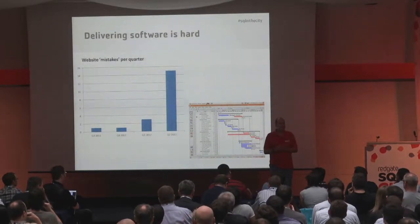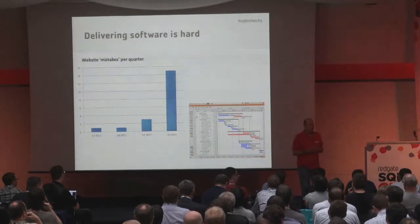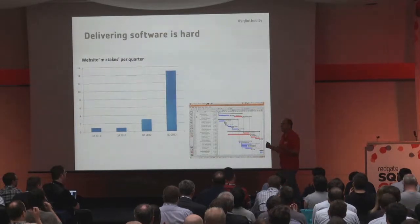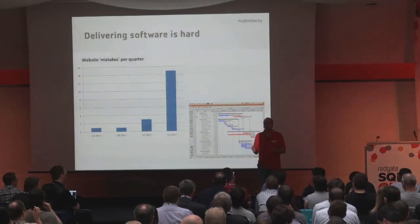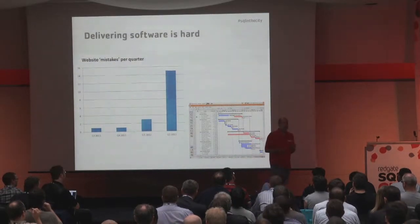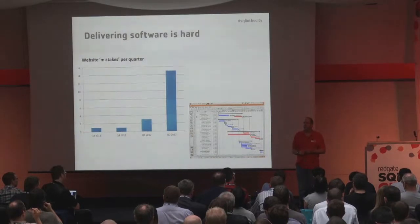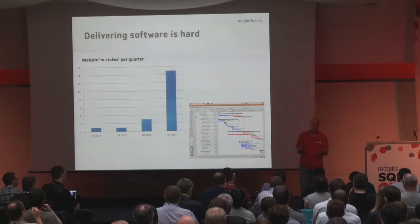It's hard for four reasons. The first is that when you deliver that software, quite often it doesn't do what people want it to do. There are scary statistics that 50% of the software we develop and deliver is not what the customer wanted. It's really hard to get that delivered on time. How many projects have you heard of where people say we're delivering on time, we're ahead of schedule, relax, everything's cool? That's not the norm.